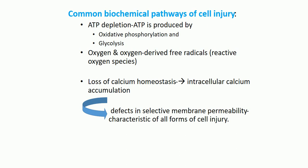Cell injury can also cause the production of oxygen-derived free radicals, meaning reactive oxygen species, which are very damaging agents to the cells. Additionally, it can cause the loss of calcium homeostasis. The loss of calcium homeostasis is due to a defect that occurs within the membrane - specifically, a defect in selective membrane permeability, which is a characteristic of all forms of injury.